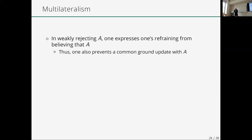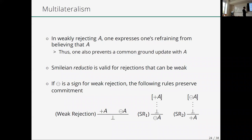There are two dimensions to consider: which attitude is expressed and what the essential effect on the conversation is. At the attitude level, in weak rejection one expresses one's refraining from believing the proposition, and in so doing one prevents a common ground update. The coordination principles then give: the assertion of A and the (weak) rejection of A lead to absurdity; if the assertion of A is absurdity, the speaker is committed to weakly rejecting A; and if the supposition that A is weakly rejected is absurdity, the speaker is committed to asserting A.